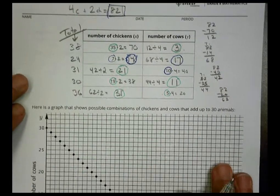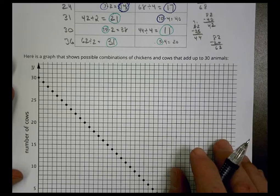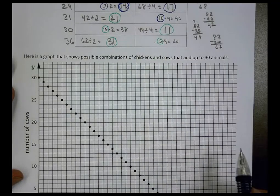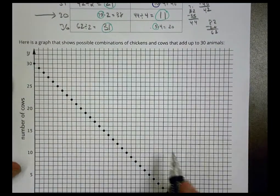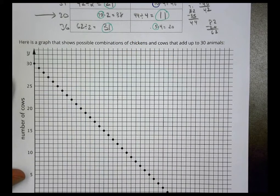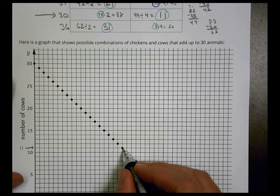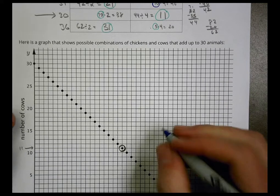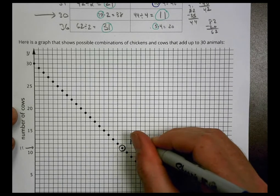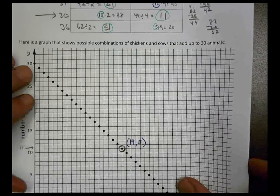The next part shows a graph of possible combinations of chickens and cows that add up to 30 animals. We already found that combination: 19 chickens and 11 cows. On the graph, chickens are on one axis and cows on the other — and we can see that point right there at 19 chickens and 11 cows, which matches our table.